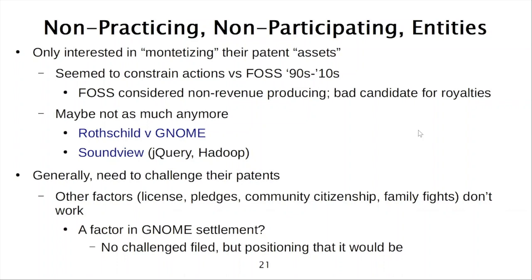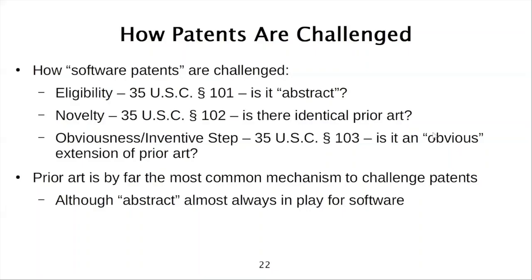It is possible that's one of the reasons why the GNOME litigation was settled. There was a fairly strong statement at the beginning of that litigation by the GNOME Foundation that they were prepared to challenge the patent being asserted, and there was an entity called Unified Patents that put out a competition to gather prior art. So there was a strong position that the patents would be challenged, and that may have been a factor resulting in the settlement in that case and the license granted to all software under a free and open source software license.